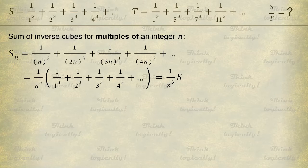What is remarkable about this approach? It allows us to find the expression for T straight away. So we take the whole sum S and subtract the sum of inverse cubes of even numbers, that is S sub 2. Then we subtract the sum of inverse cubes for the multiples of 3, that is S sub 3.